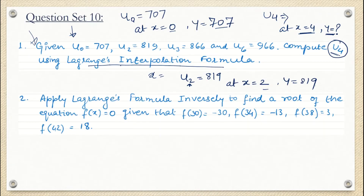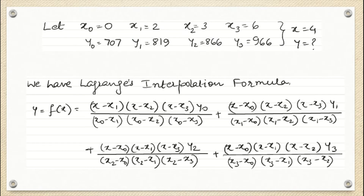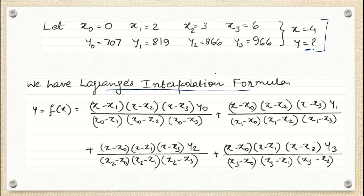So the data provided is: x0 = 0, x1 = 2, x2 = 3, x3 = 6, and we need to find y at x = 4. To use Lagrange's interpolation formula, the data set tells us how many terms there will be. We have four data sets, so there will be four terms in the formula.